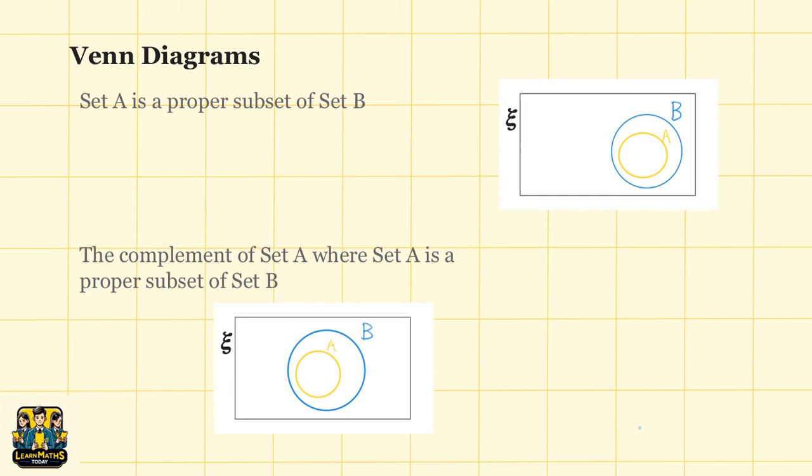Now, how do we identify the area where it is the complement of set A, where set A is the proper subset of set B? So, using the diagram above, now you have to identify the complement of set A. Remember, the complement of set A is all the area that are not inside set A. This means you can just simply shade all the area outside the yellow circle.